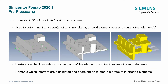Now we're getting into some preprocessing upgrades. Under Tools there's a new Check Mesh Interference command where you can figure out if there are any elements that are intersecting or interfering with each other. The cool thing about this feature is it checks line, planar, or solid elements and also checks the thickness of your line or planar elements, including the cross section. When you run this check it'll also let you create a group of the interfering elements, helping you isolate and operate on them.